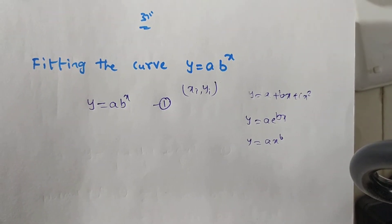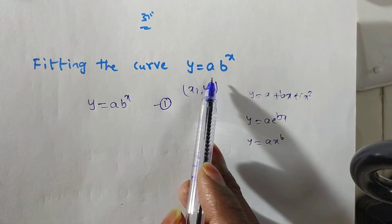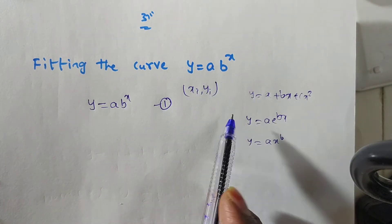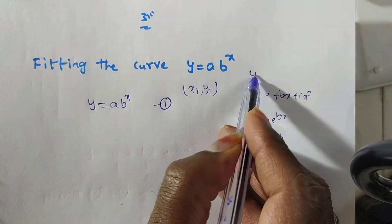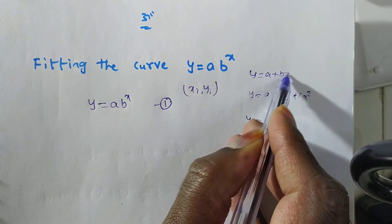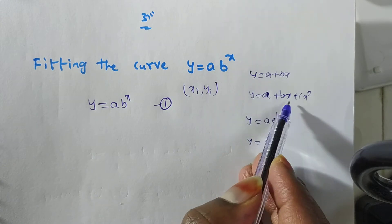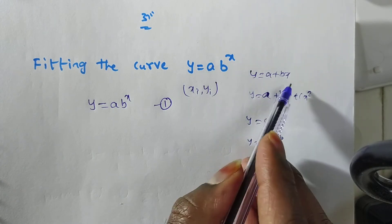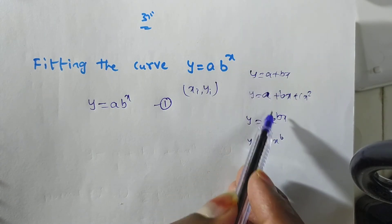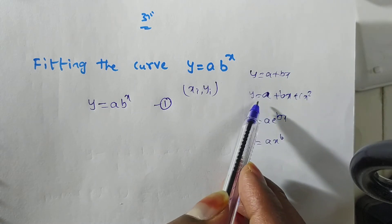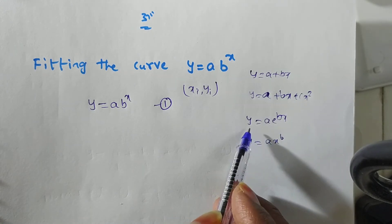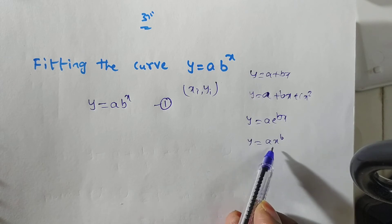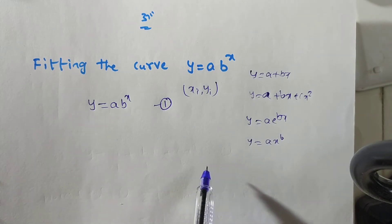In this video we are discussing fitting a nonlinear curve y = ab^x. In earlier videos we discussed fitting the linear curve y = a + bx and y = a + bx + cx². Since the degree is one, those are linear. All others are nonlinear — for example, y = ab^x and y = ax^b are nonlinear equations.